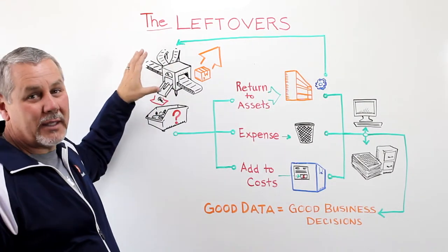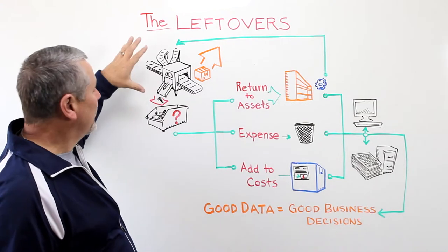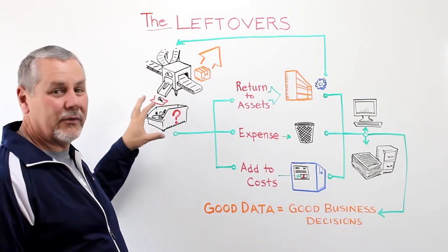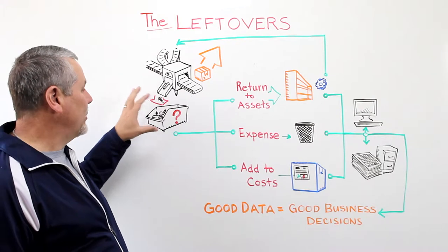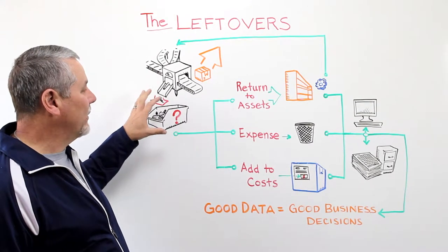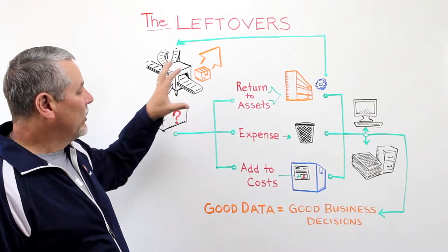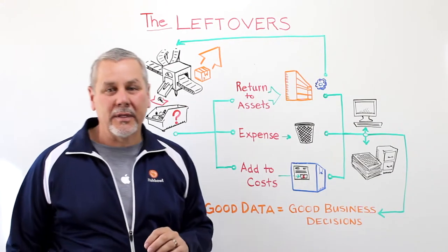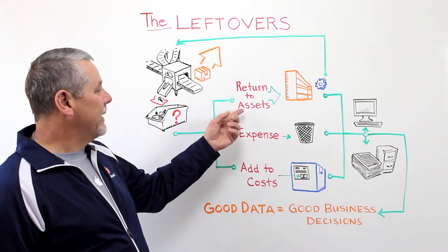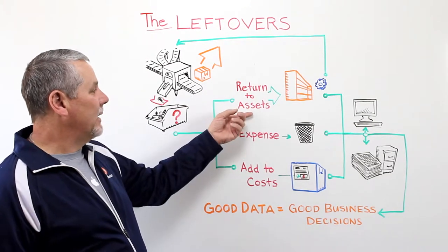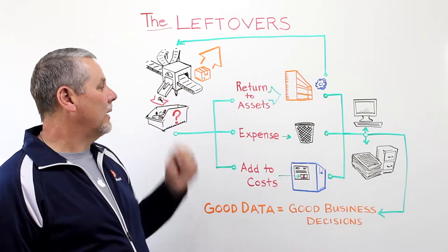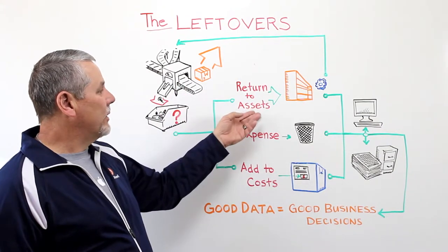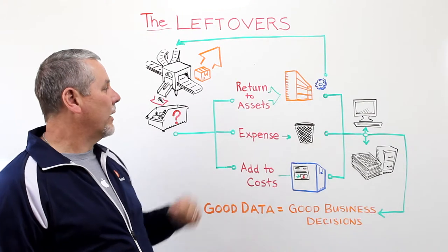In the manufacturing process, when manufacturers make something, they always have these leftovers, and they have to make a choice of what they're going to do with those leftovers. There are three basic things that can be done with these leftovers. The first one is if it's something that they can reuse in a future manufacturing process, they can choose to return that to their inventory.